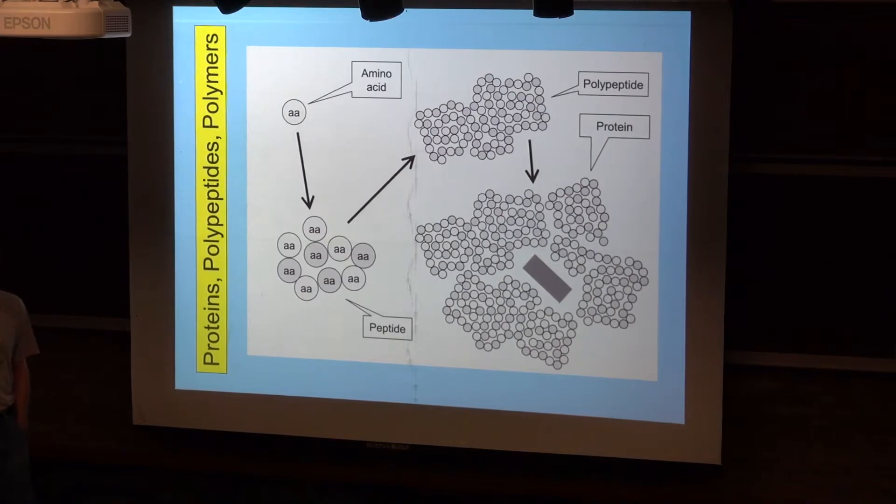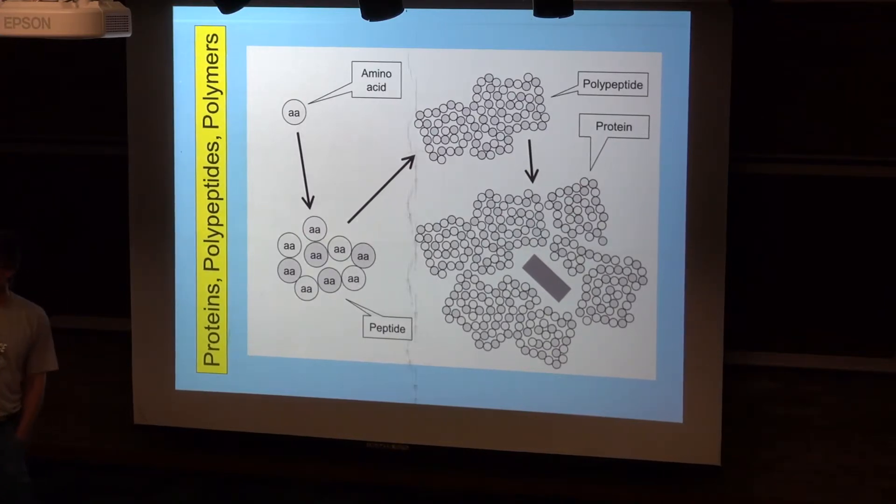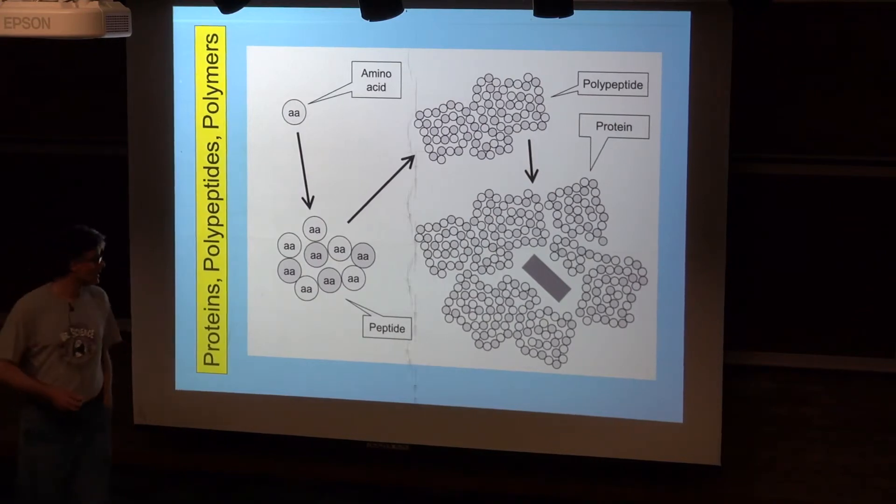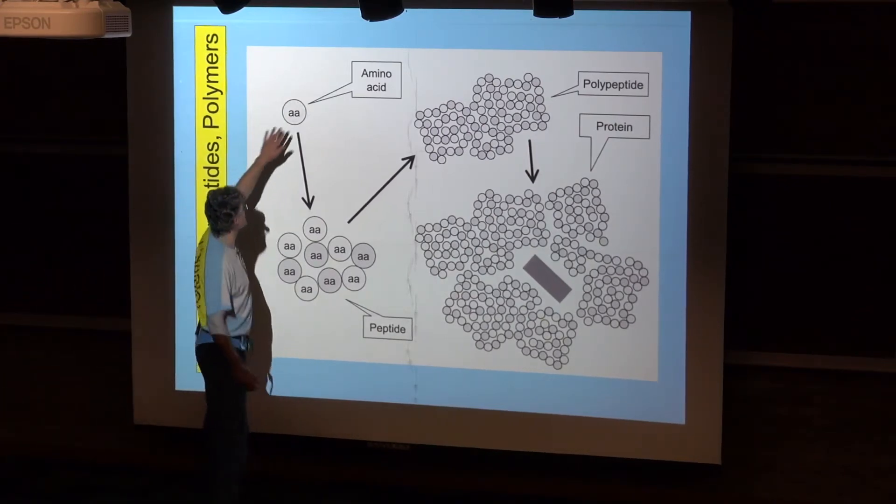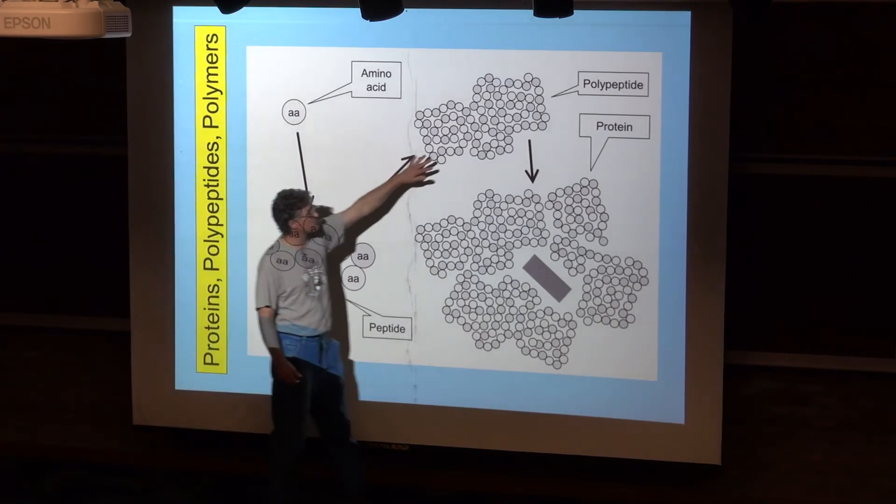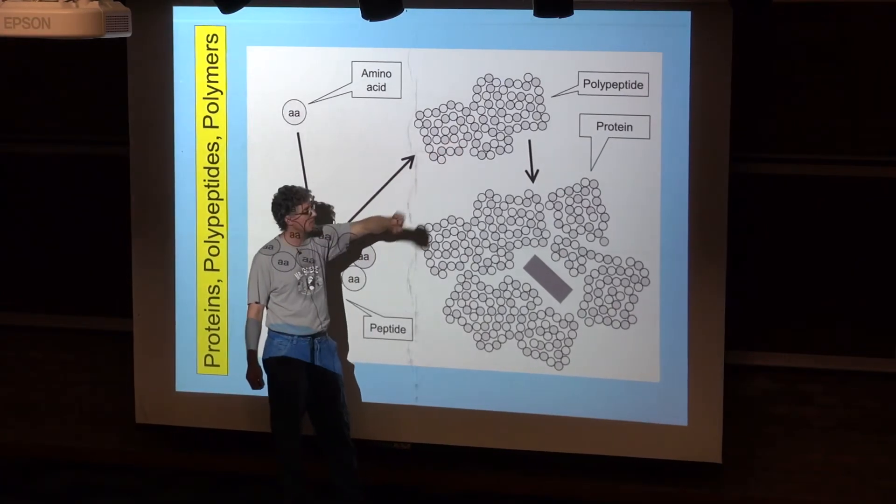It's the combining of multiple, one or more polypeptides with non amino acid substances that in fact are the proteins. What you see here is the subunit that makes up polypeptides, the polypeptides which are chains of these subunits, the amino acids, and then this is an example of a protein.